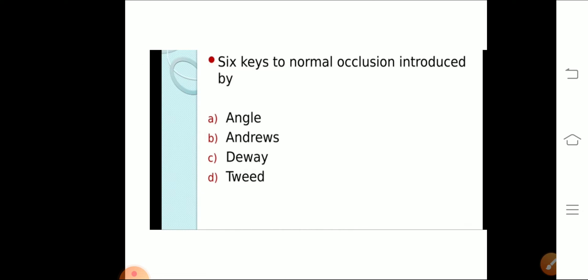The first question is the six keys to normal occlusion. Which scientist gives the six keys to normal occlusion? The first is Angle, second is Andrews, third is Dive and fourth one is Tweed. The scientist who gave the six keys of normal occlusion is Andrews. You have to remember the name of the scientist plus you have to remember the six keys of normal occlusion.